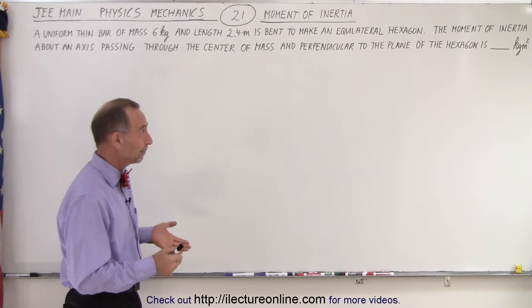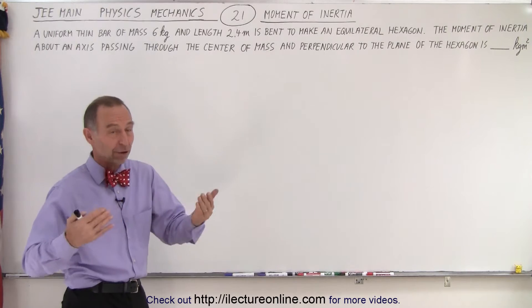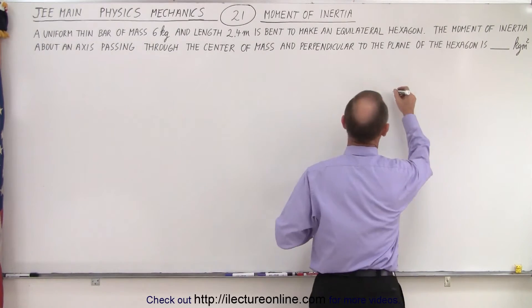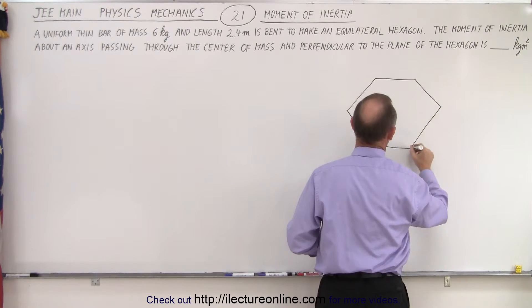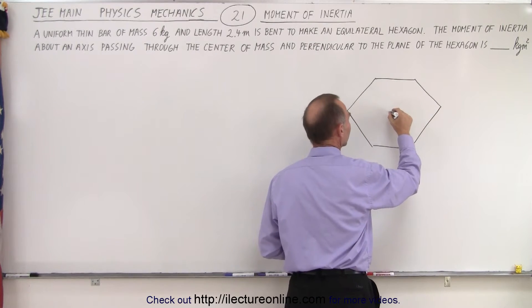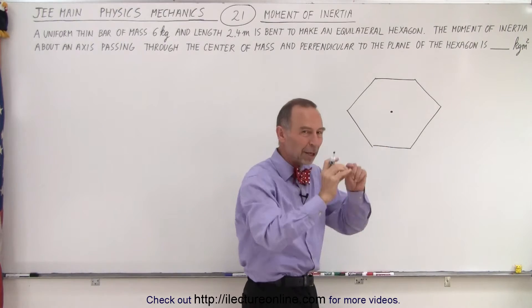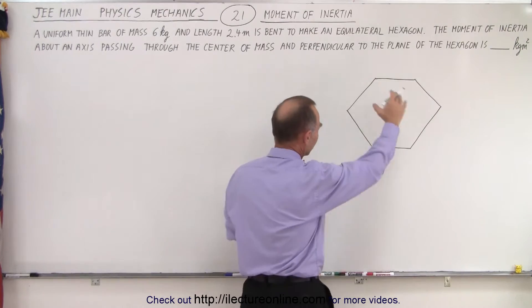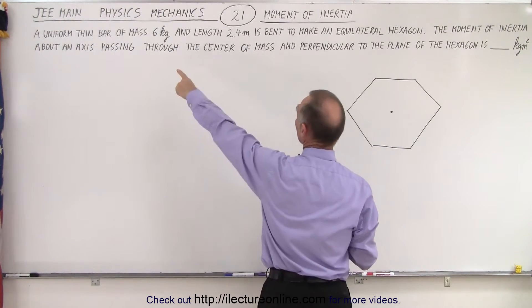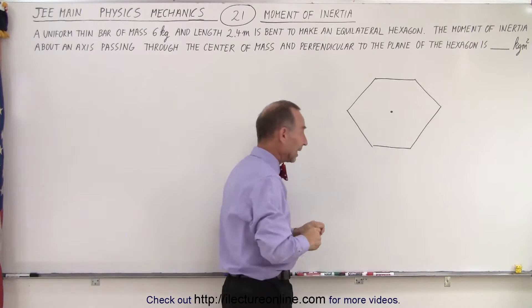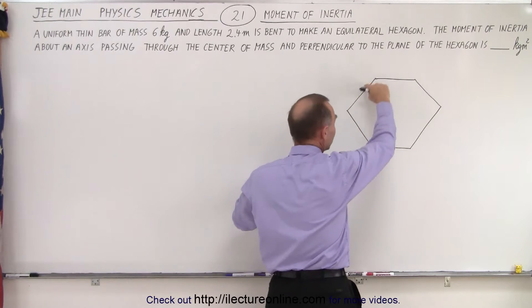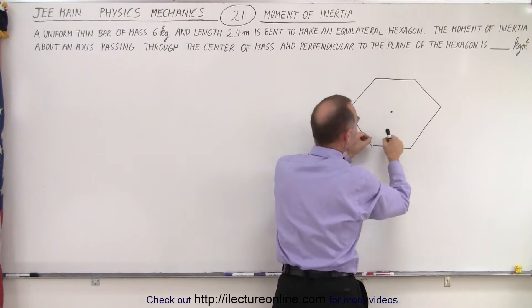Wow, where do we begin? Well we probably want to begin by drawing a hexagon. So let's do that. There we go, and the center mass. Now this is hollow, there's nothing there. This is made up of a bar, so it's a linear shape, and the bar is 6 kilograms and 2.4 meters long bent into this shape.